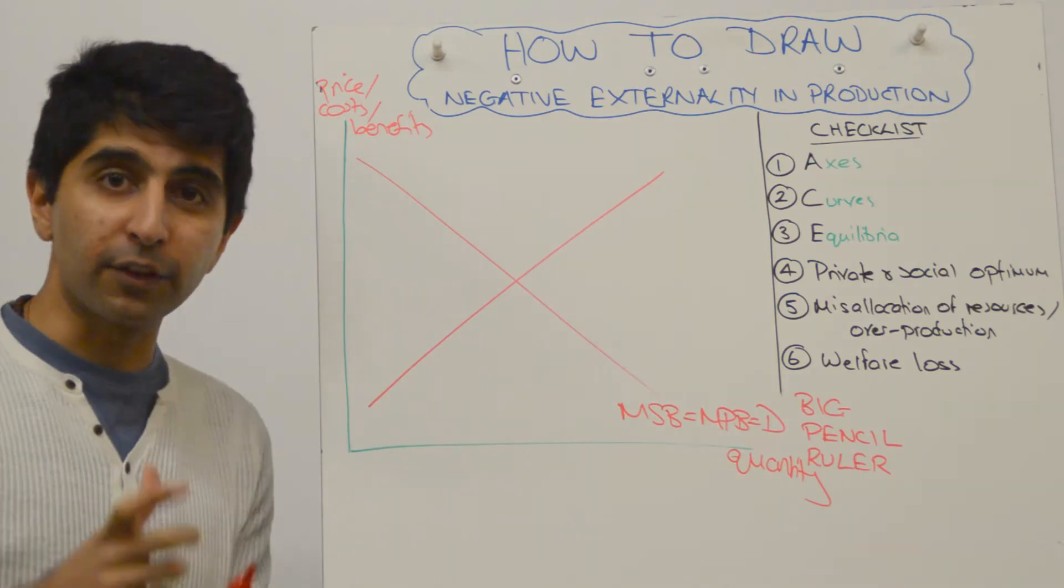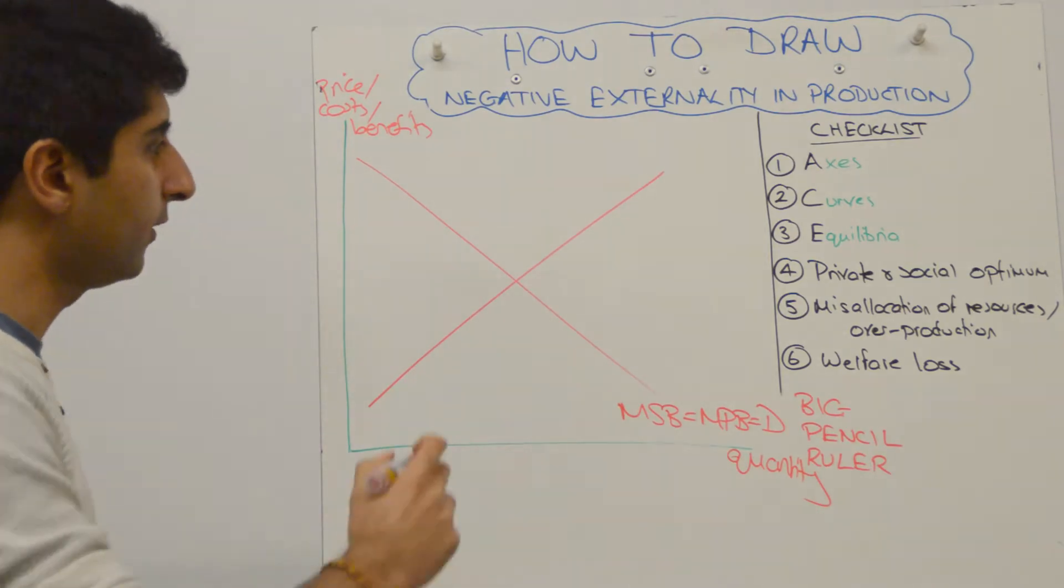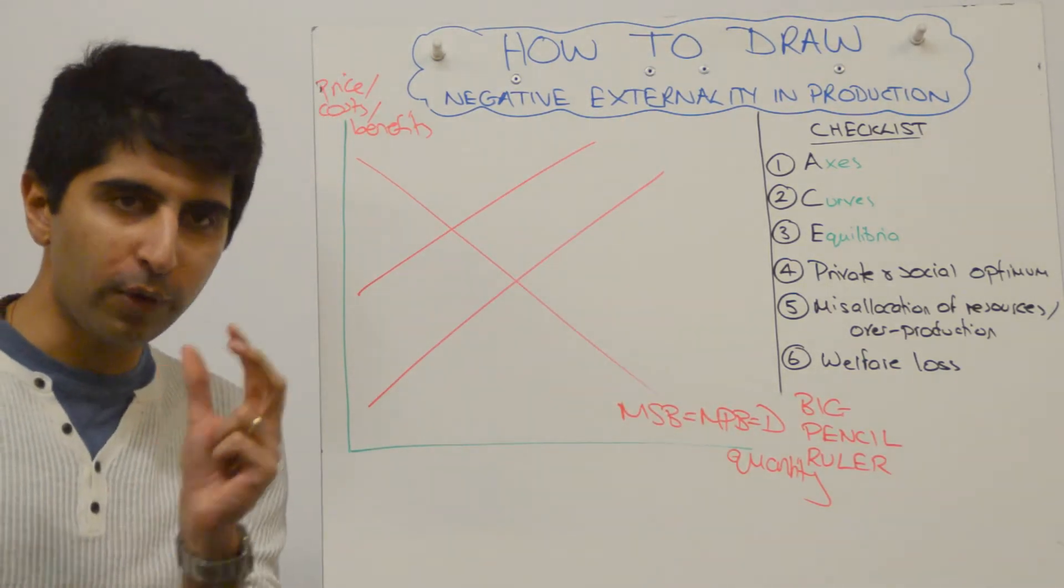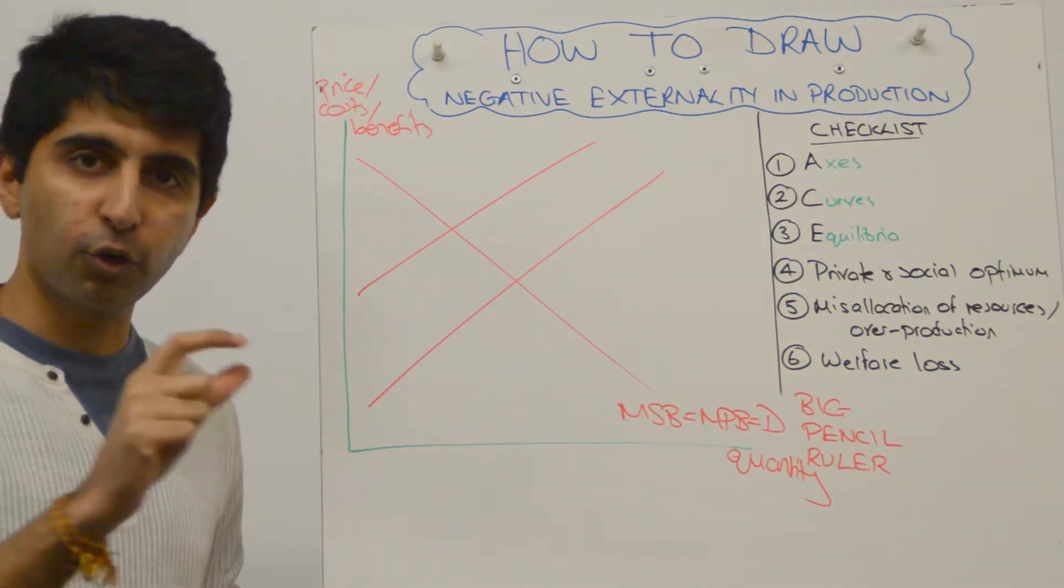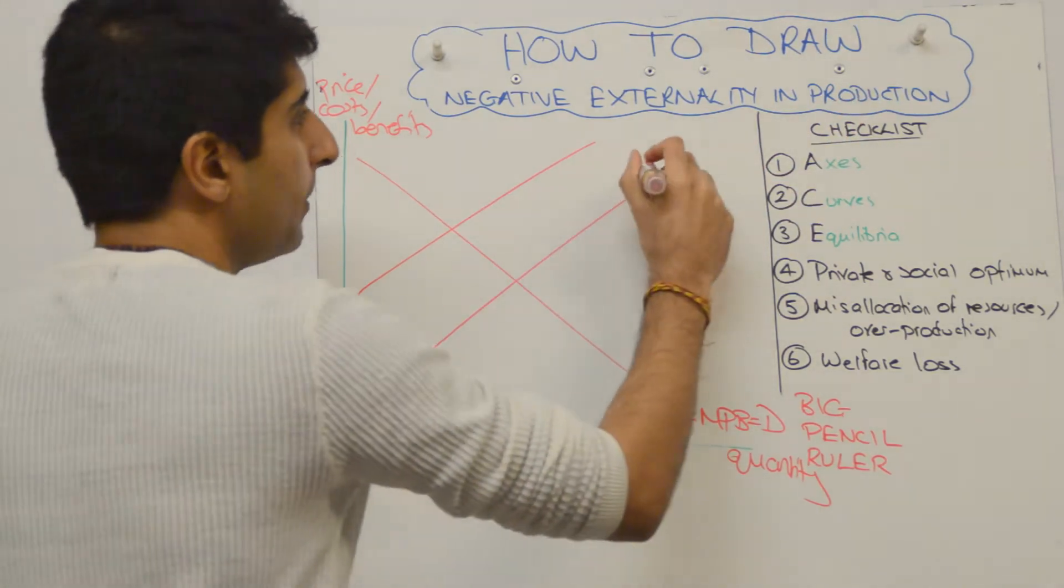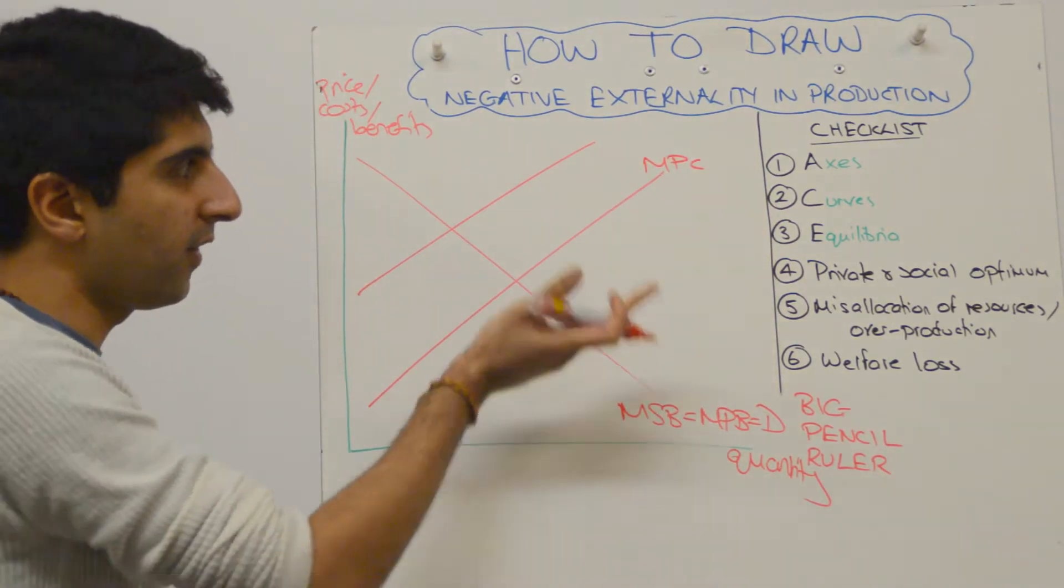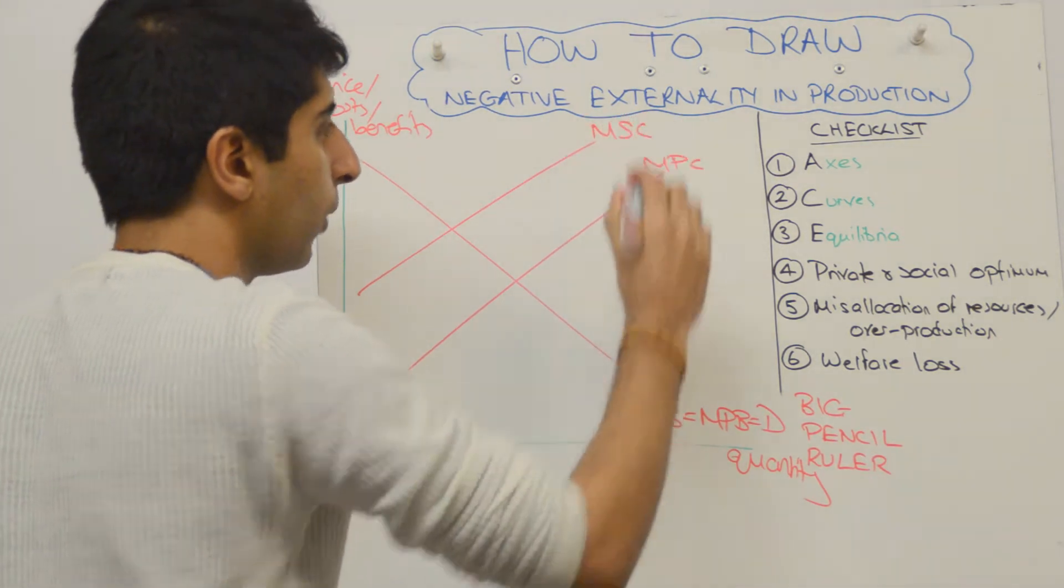So production tells us the cost curves. Negative externality implies that the social cost curve is going to be to the left of the private cost curve. That's a nice little trick to help you get this diagram right. Negative means social always to the left. Production or consumption tells you which curve, cost or benefit. So that means we have a marginal private cost curve but our marginal social cost curve is to the left of it. It's higher than our marginal private cost curve.